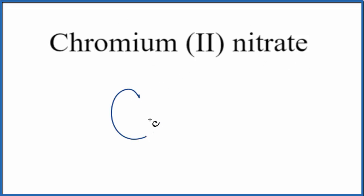So chromium on the periodic table, that's Cr, it's a transition metal. And then nitrate, if you see this ATE, you know it's going to be a polyatomic ion.